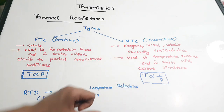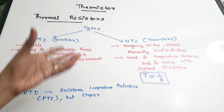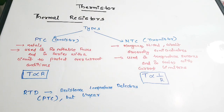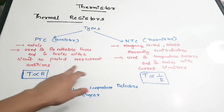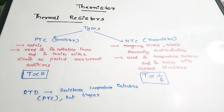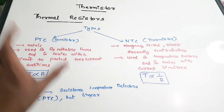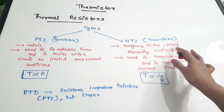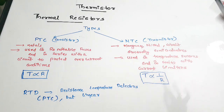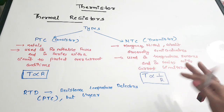Devices with NTC are generally called thermistors, while PTC devices are called sensistors — there is separate naming. PTCs are generally made up of metals and are used in resettable fuses and in series with circuits to protect against over-current conditions. Thermistors are generally made up of manganese, nickel, cobalt, or semiconductors, because semiconductors have a negative temperature coefficient of resistance.